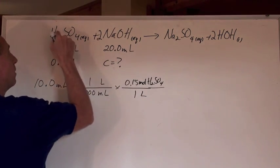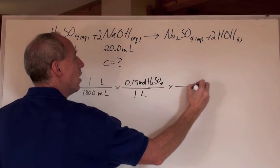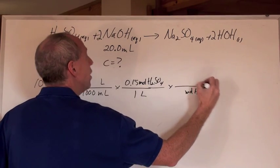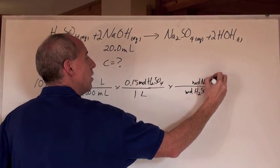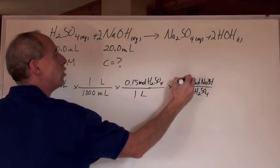So now what have we got? We've got the moles, when we do this cancellation, we've got moles of H2SO4. We don't want moles of H2SO4. What do we want? We want the moles of the NaOH. NaOH. And what's the ratio of reaction between the two? 2 to 1.